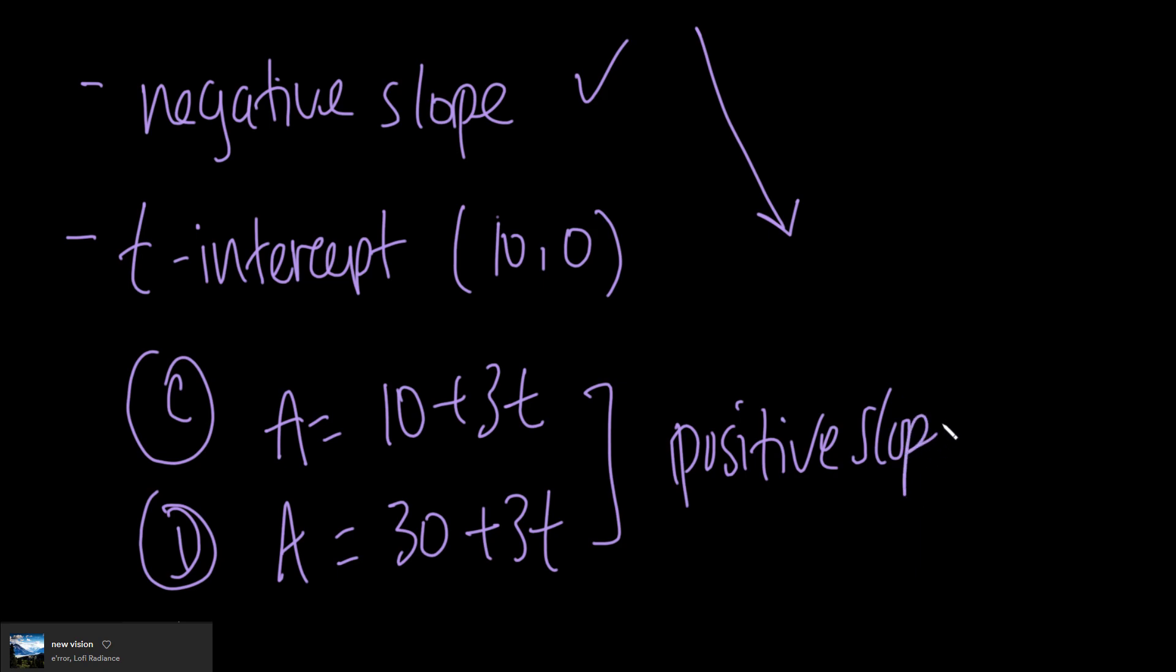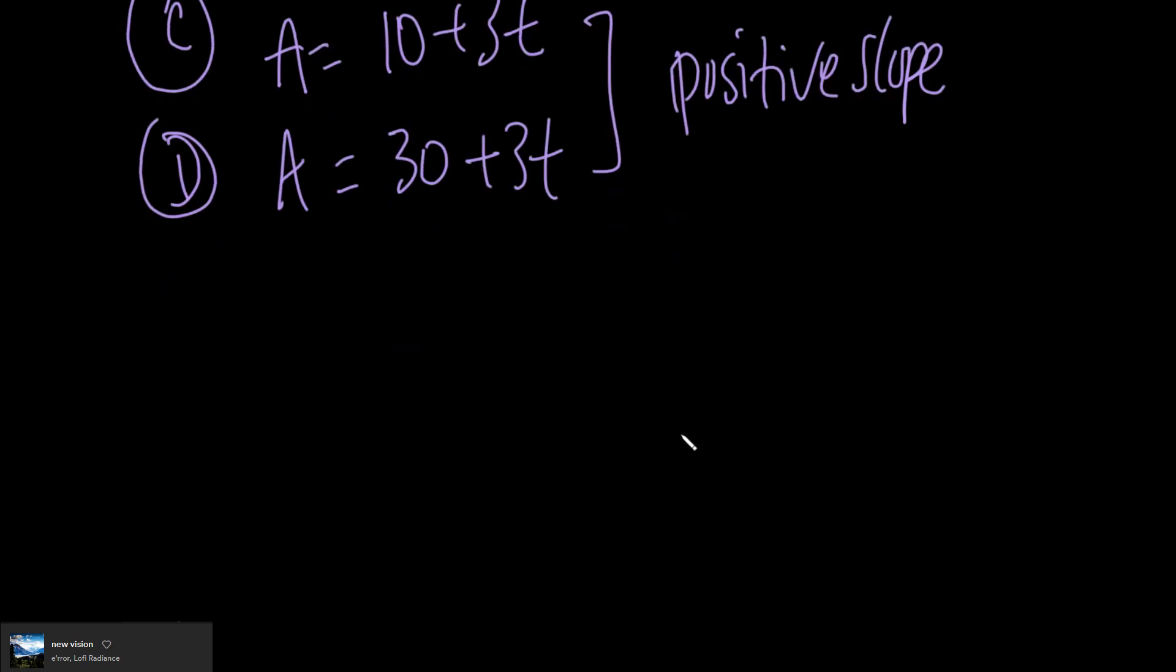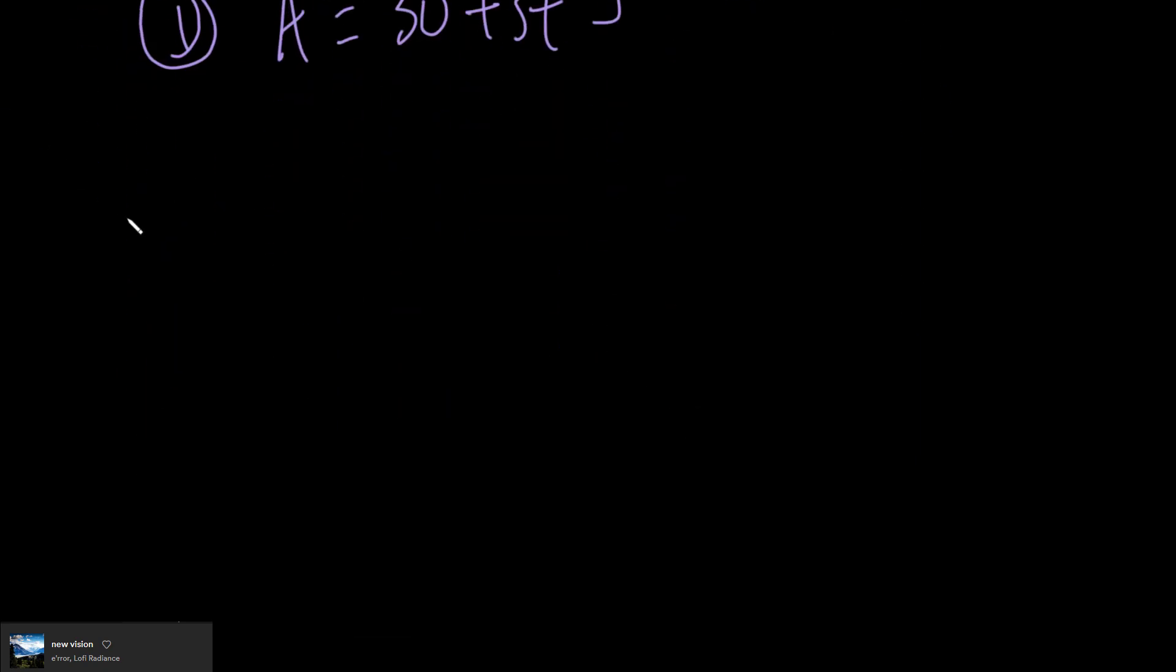Our answer can either be A or B. Option A has 10 - 3t and option B has 30 - 3t. How do we figure out the answer between these two?